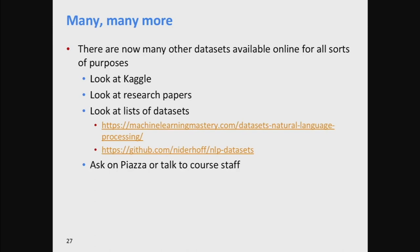There are tons of other data sets: Facebook has released data sets, Google has released data sets, and at Stanford we've released several others including the Stanford Sentiment Treebank, the Stanford Natural Language Inference corpus, and new question answering data sets including HotpotQA and Conversational Question Answering. You can find data on sites like Kaggle, sites with lists of data sets, research papers, and of course you can ask the course staff on Piazza to help find suitable data sets for a project.